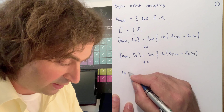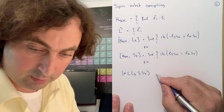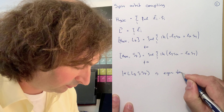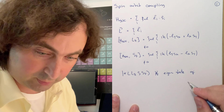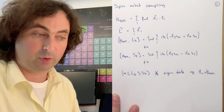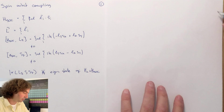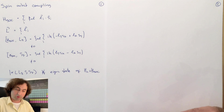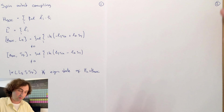So the labeling we had of our states by L, Lz, S, and Sz is no longer an eigenstate of the Coulomb operator plus the spin-orbit coupling operator. Therefore, in principle, we should find a completely new set of states and ways to label them.